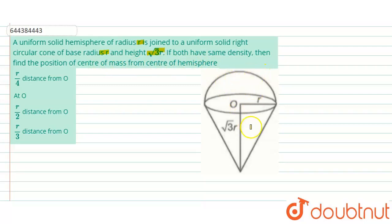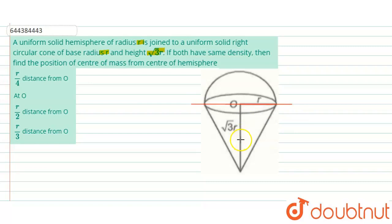You can see that this is a solid hemisphere and this is a solid right circular cone of radius r, so the radius of the base of the cone and the radius of the hemisphere are the same. They are made up of the same material, having the same density. Let us take this as the x-axis and this as the y-axis, passing through point O as the origin.